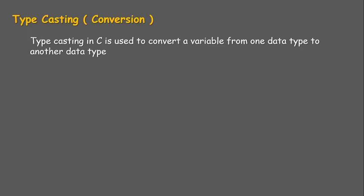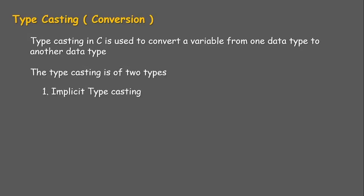When a variable's data type changes, that is typecasting. Typecasting is of two types: first, implicit typecasting; second, explicit typecasting.